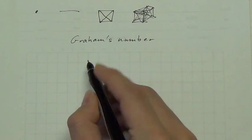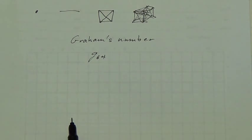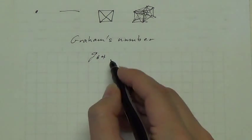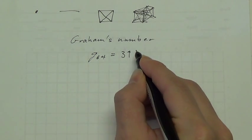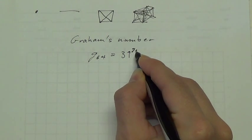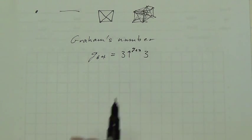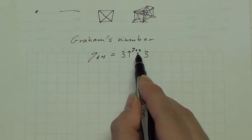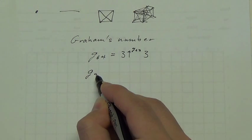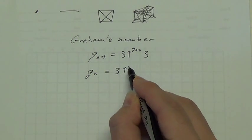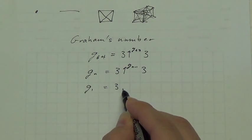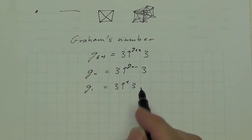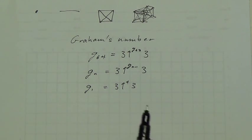Graham's number is often written G64 — it's the 64th iteration of a process. In general, Gn is defined as three up-arrow (with Gn-minus-one arrows) three, and G1 is three four-up-arrow three. Let's see if we can get some sense of just G1.